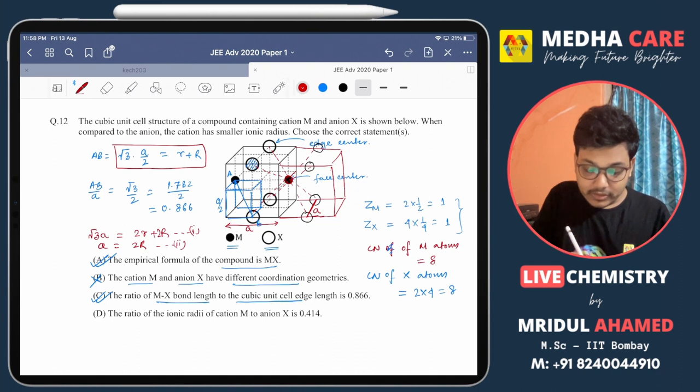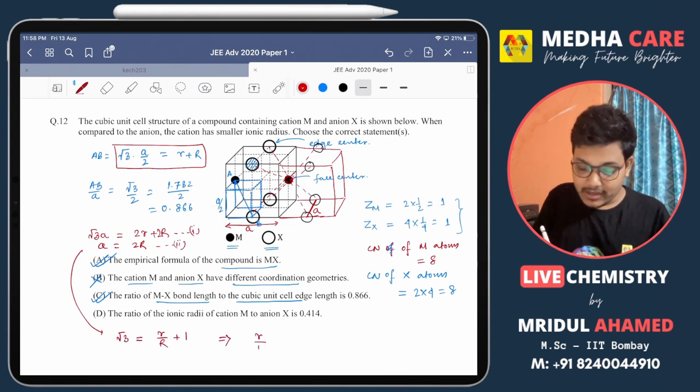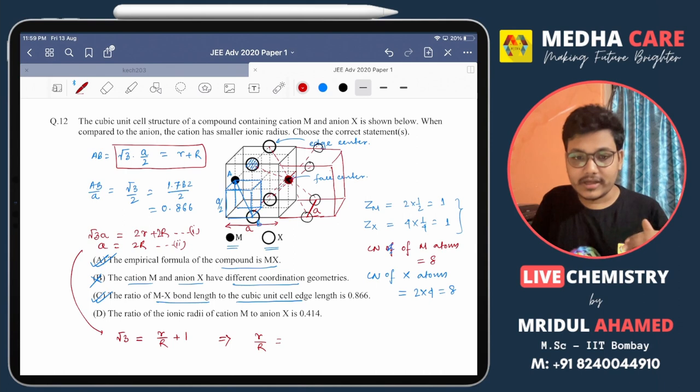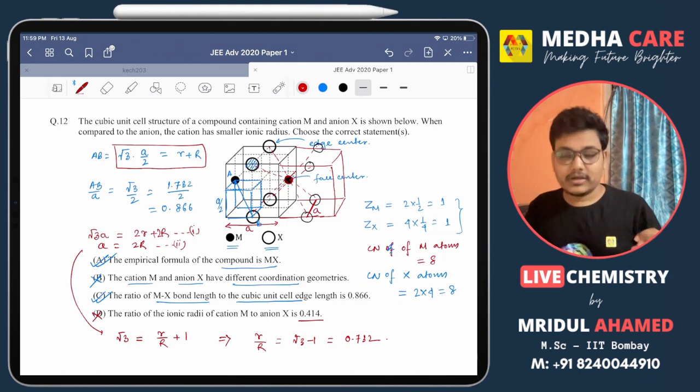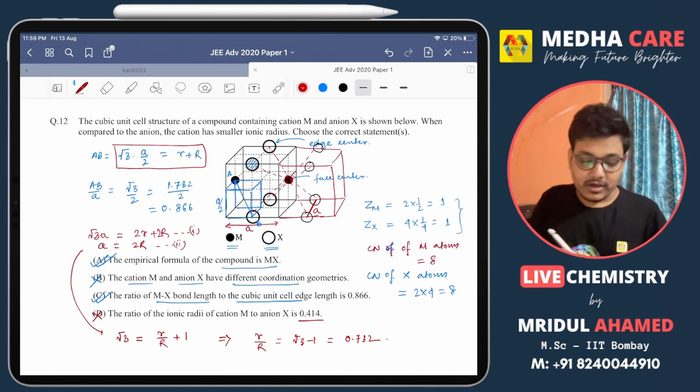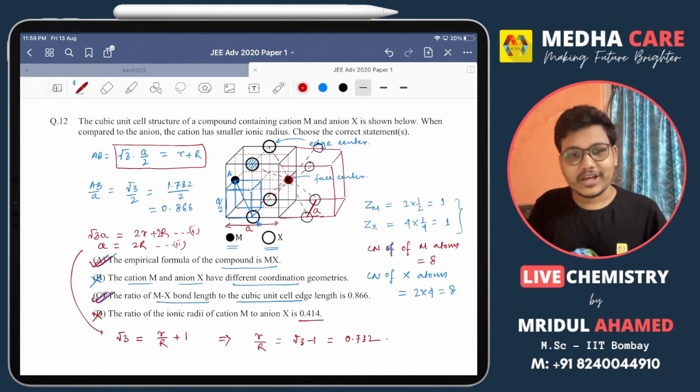root 3 equals small r by capital R plus 1. So the r/R ratio, cationic radius to anionic radius, will be root 3 minus 1, so that will be 0.732. Where it says 0.414, so it will be wrong. The correct options are option A and option C. Thank you very much.